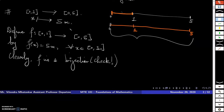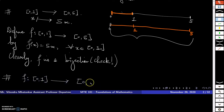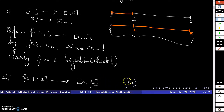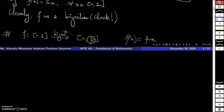We can extend this idea and find a bijection from closed interval [0,1] to any interval of the form [0,p]. We define the map f by f(x) = px for each x in [0,1]. That is the bijection we are looking for. So in general, if we have [0,1] to [0,p] where p is any positive real number, then we can define a bijection between them.